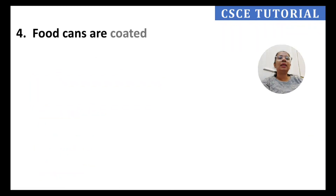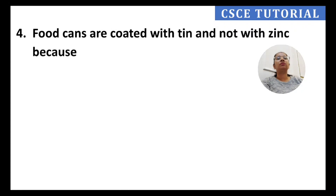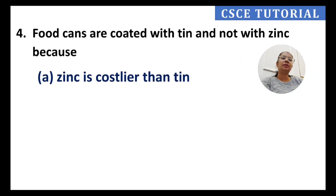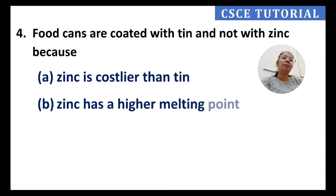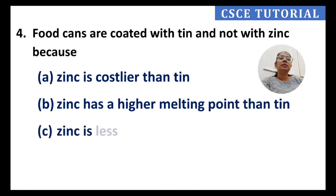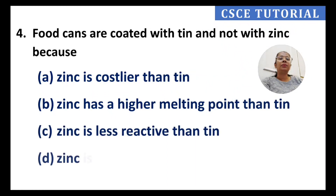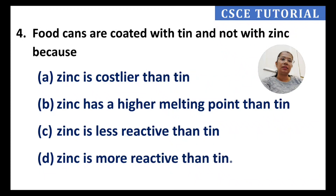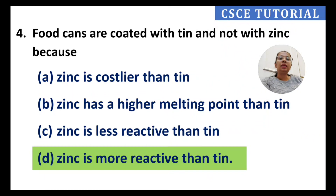Question 4: Food cans are coated with tin and not with zinc. The answer is D — zinc is more reactive than tin. Because zinc is more reactive, it would react with the food inside the can. Therefore, tin is used to coat food cans instead of zinc.